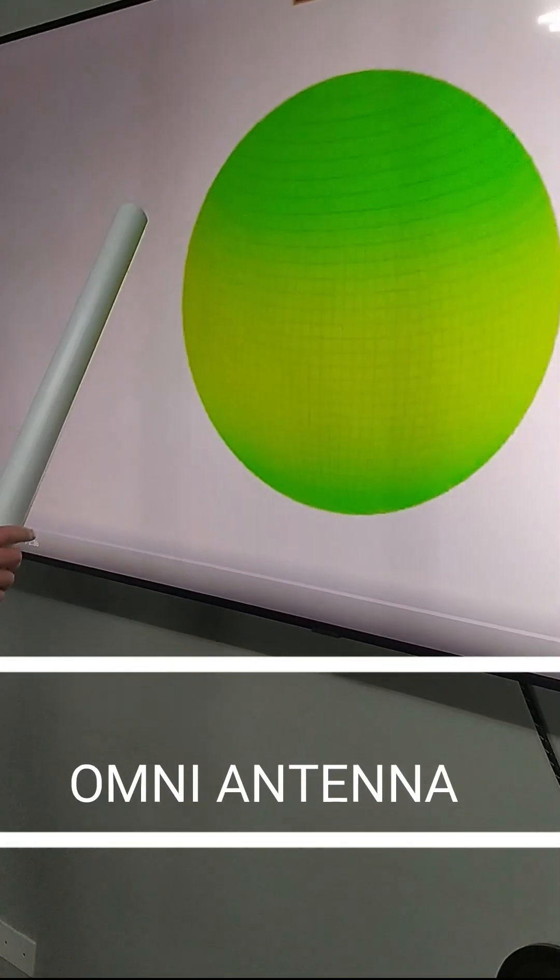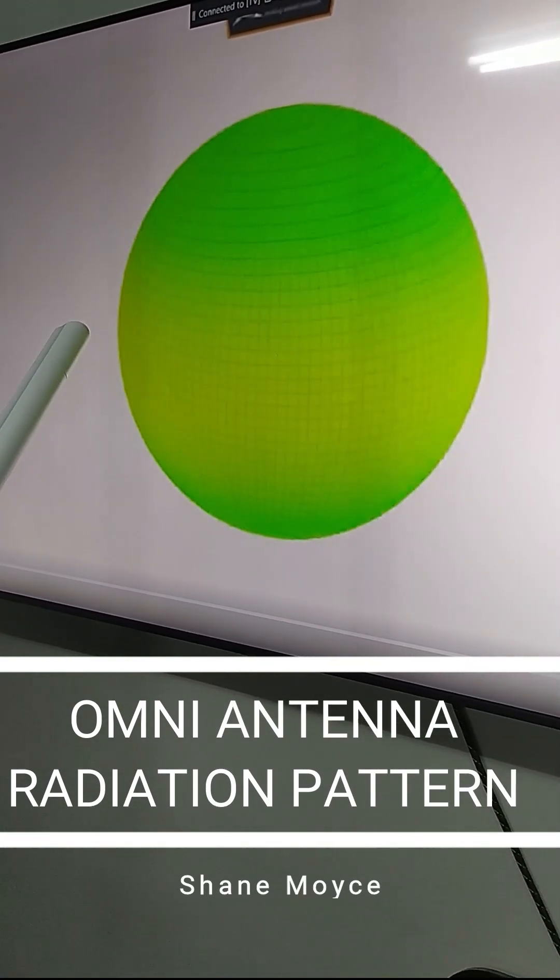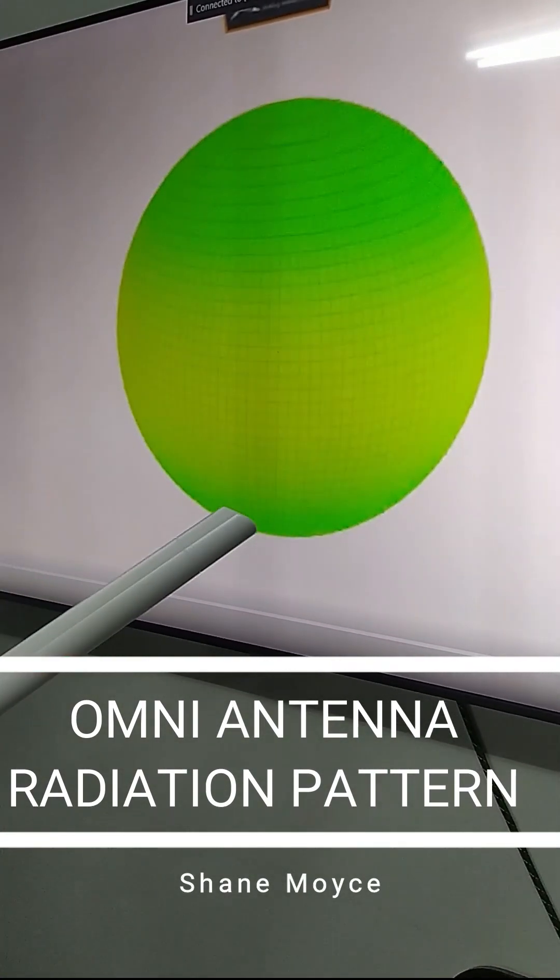So here we have a radiation pattern of an isotropic antenna, which means energy is radiated evenly in all directions in space.